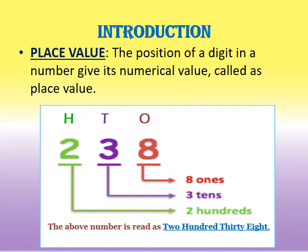Now let us understand what we mean by place value. The position of a digit in a number gives its value — the numerical value — and this is called place value. That means we can understand the value of every digit in a number depending upon which place it lies in. For example: 8 is in the units place, so its value is 8 ones. 3 is in the tens place, so it is 3 tens. 2 is in the hundreds place, so the value of 2 is 2 hundreds. The place value of 3 is 3 tens and the place value of 2 is 2 hundreds.